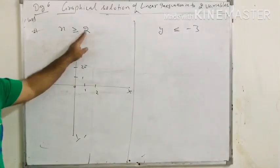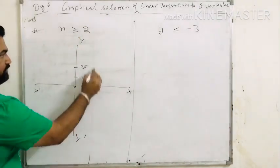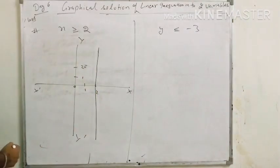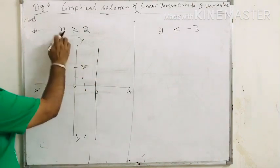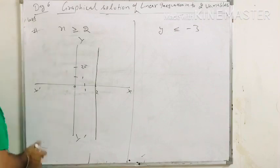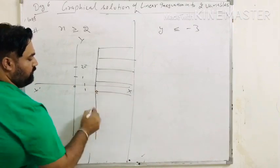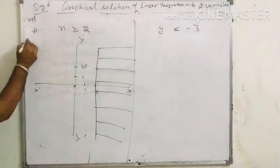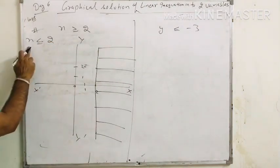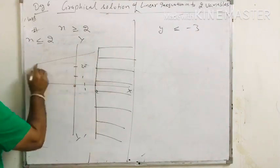The next one is x greater than or equal to 2 — meaning the value of x is 2 or greater than 2. This is the graphical solution: x equals to 2 is a vertical line. x greater than 2 means values 2, 3, 4, 5, 6, so this is the shaded region to the right. But if x is less than or equal to 2, that means values less than 2 such as 1, 0, minus 1, so the region is to the left.